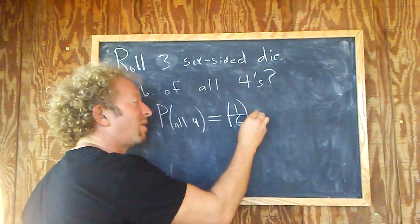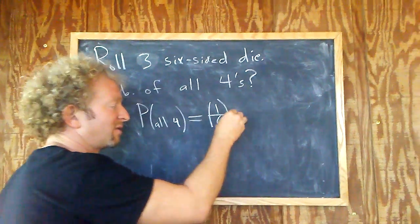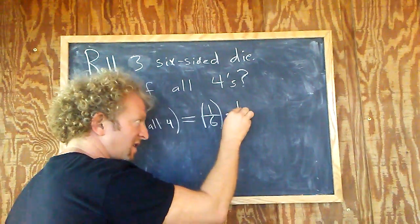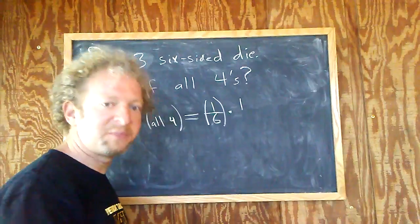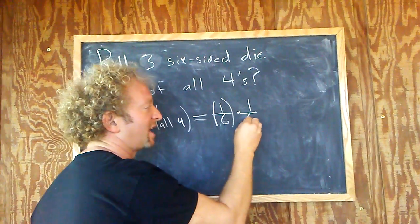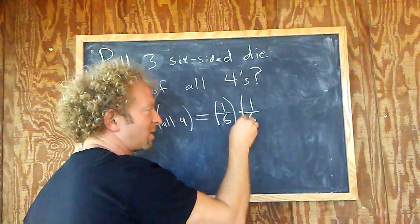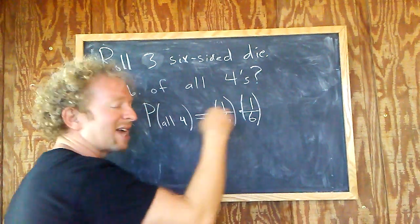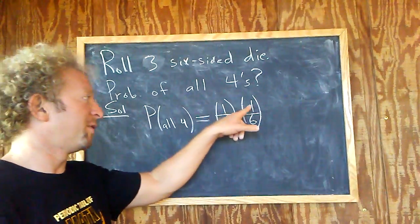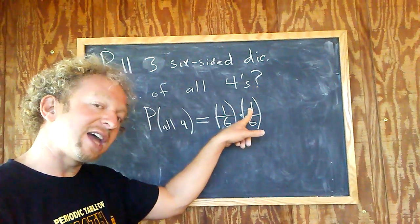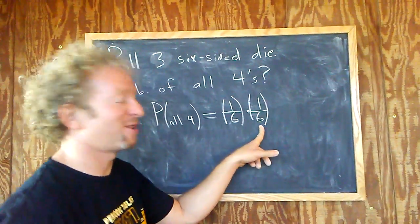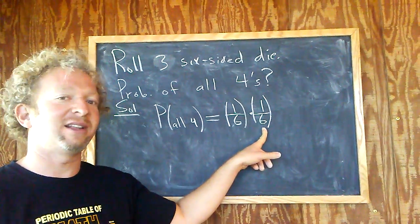The second die also has to land on four. Again, there's one way for the die to land on four and six ways for the die to land. So the probability that the second die lands on four is also 1/6 — the number of ways to land on four divided by the total number of ways to land.